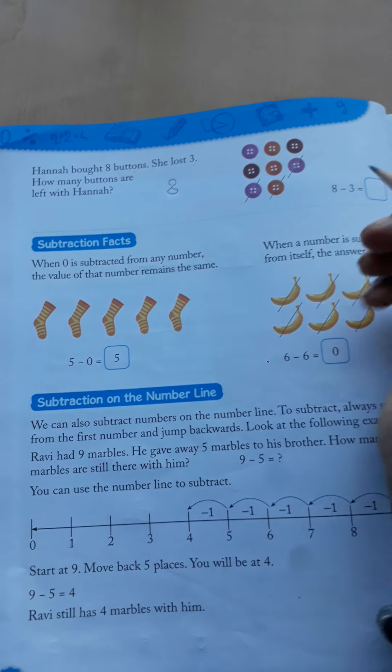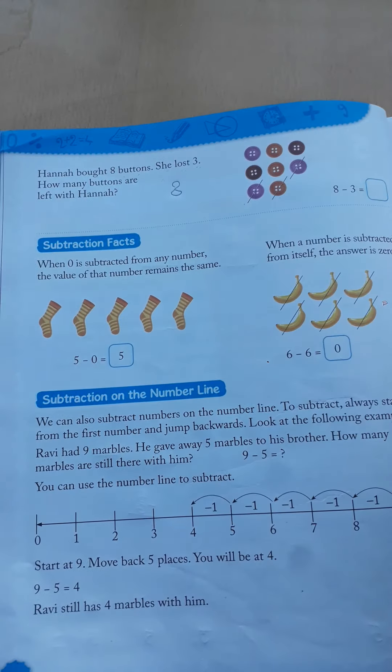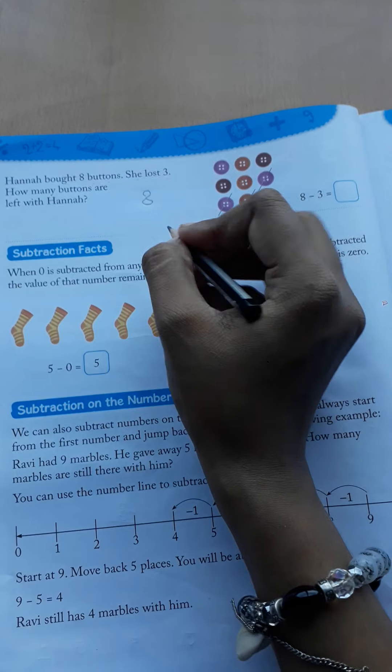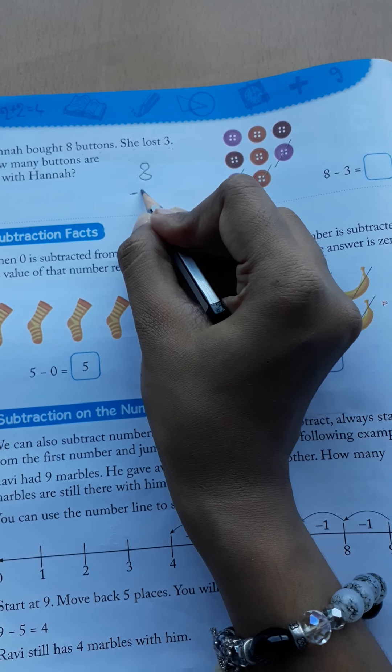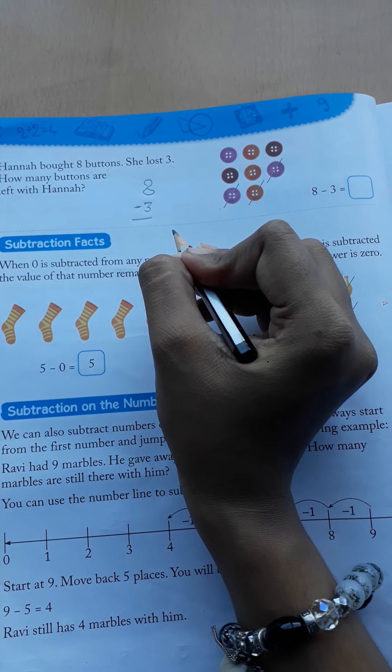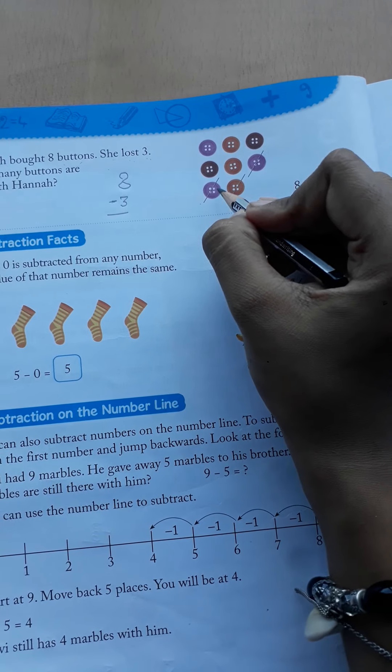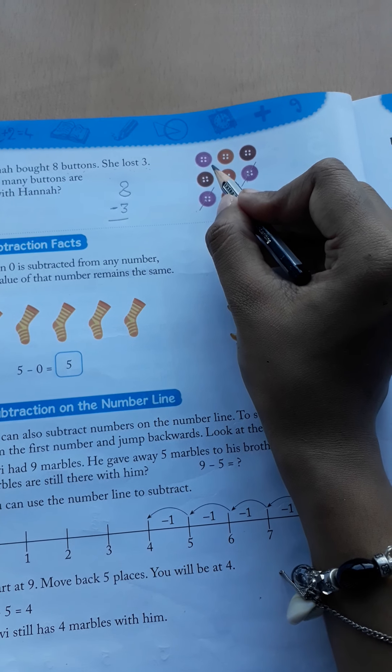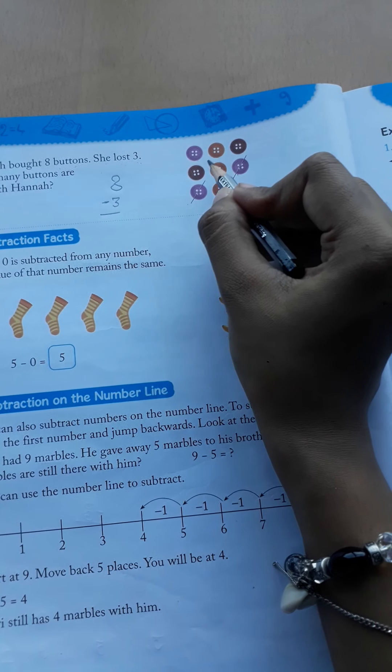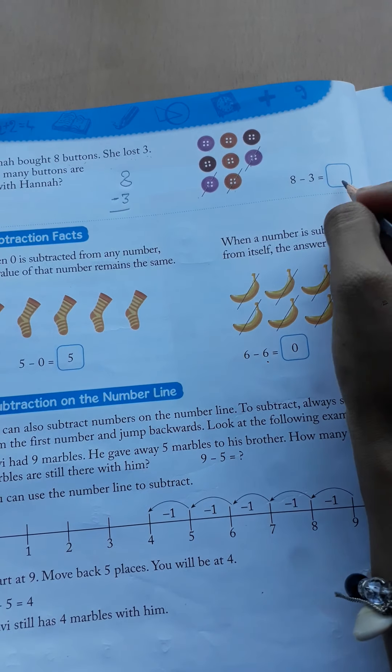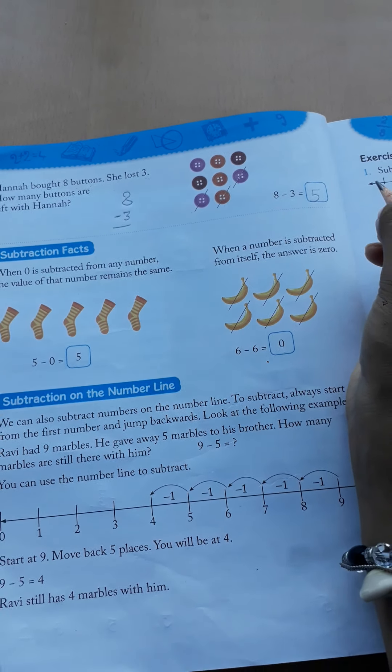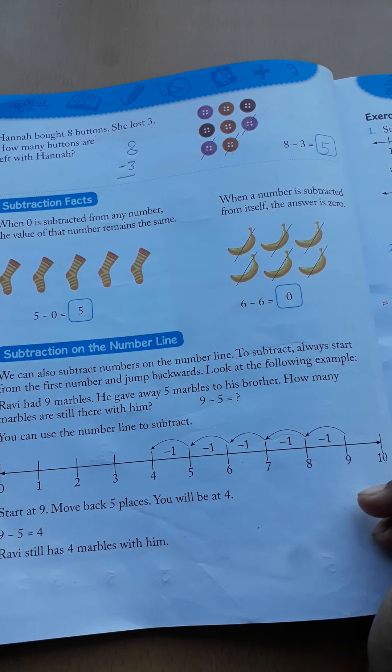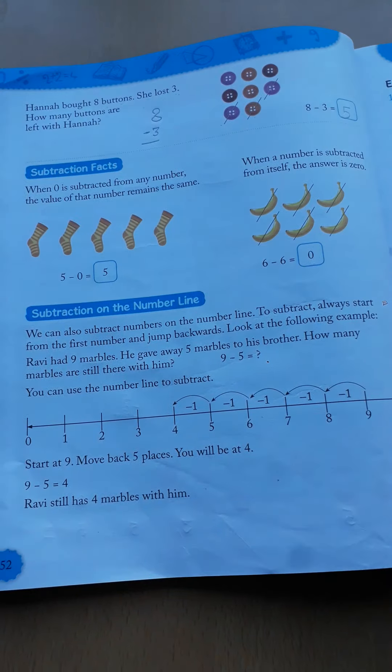Now how many buttons are left with Hannah? Toh jab 8 buttons mein se Hannah ne 3 lost kar diye, so how many buttons are left? Let's see. One, two, three left ho gaya. So how many buttons are with us? One, two, three, four, five. So we are having 5 buttons. Now see.